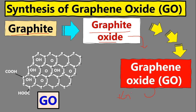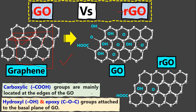That reduced graphene oxide is more or less close to graphene — not graphene oxide. If you minimize the number of functional groups, it is just like graphene. But for simplicity, I just want to make a difference between graphene oxide and reduced graphene oxide.